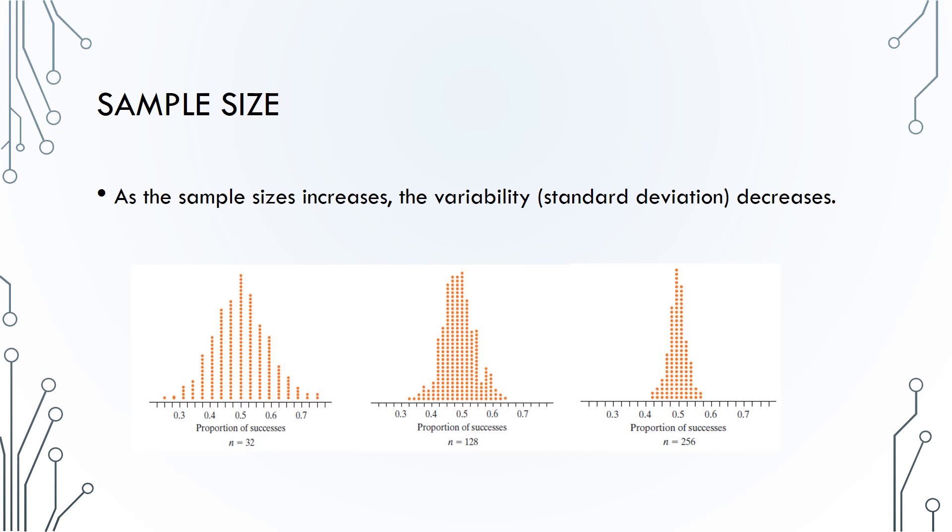They are all on the same scale, but the sample size changes from n equals 32 on the left, to n equals 128 in the middle, to n equals 256 on the right. Clearly, variability is decreasing as sample size increases. What does that mean for strength of evidence?